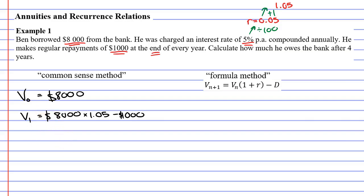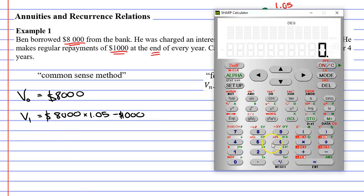So what do we get when we make this calculation? 8,000 times 1.05. This increases it by 5%. We're now at 8,400. And then we subtract 1,000. We subtract our repayment. And we end up at $7,400.